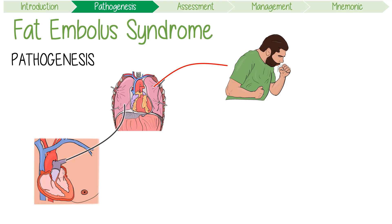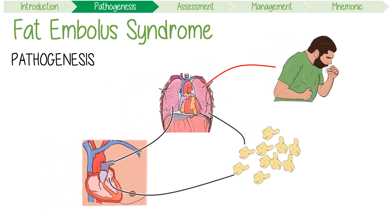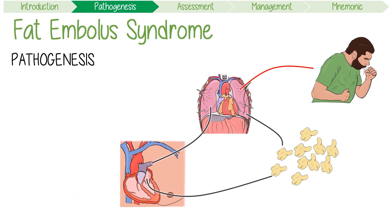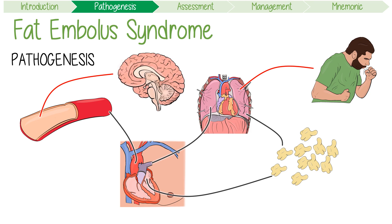Some really tiny fat microemboli are thought to be so small that they are able to pass through the pulmonary circulation into the left side of the heart. These microthrombi will then be ejected through the aorta back into the systemic circulation. This might explain the neurological symptoms and the petechiae associated with FES.